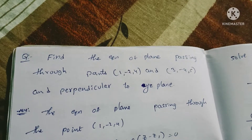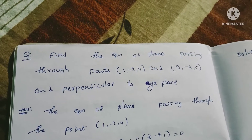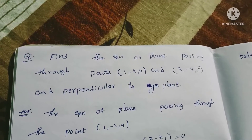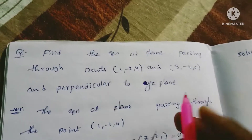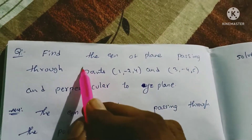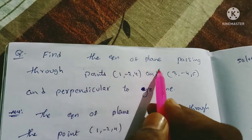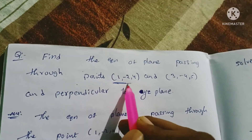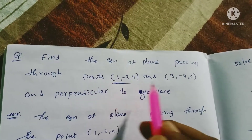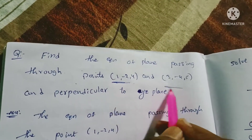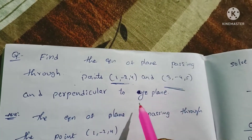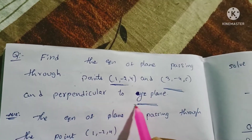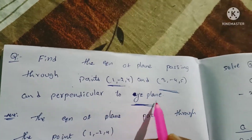In this model, this is the second question. Find the equation of the plane passing through the points (1, 2, 4) and (3, 4, 5). The plane is perpendicular to the y-z plane. The first question involved the x-y plane; this one involves the y-z plane.